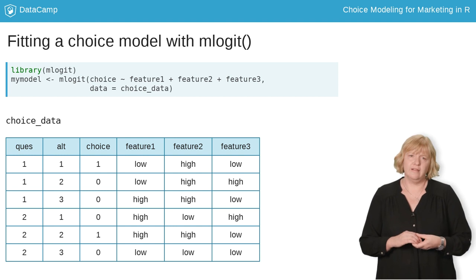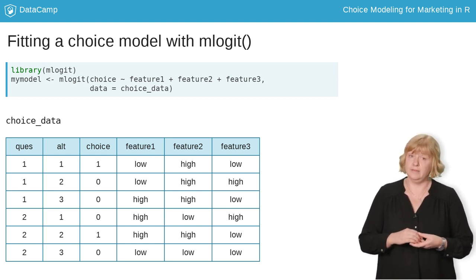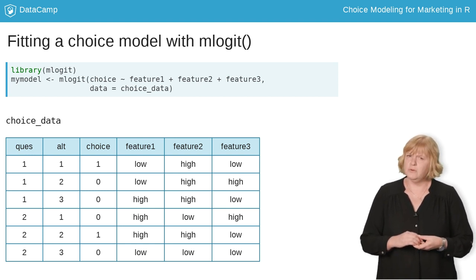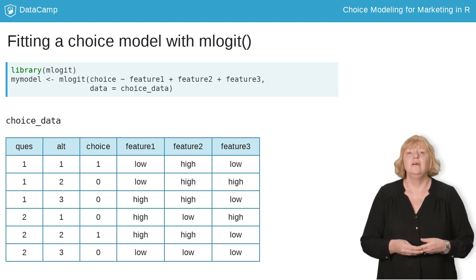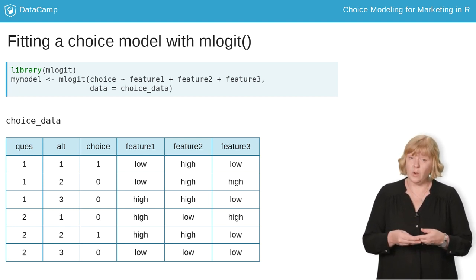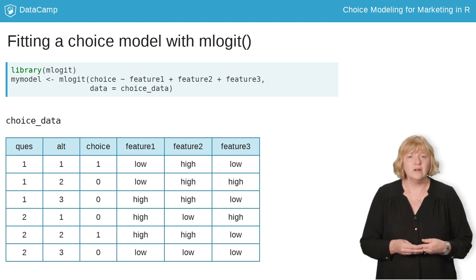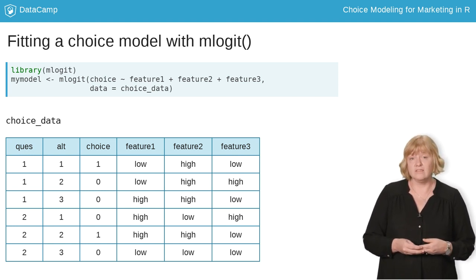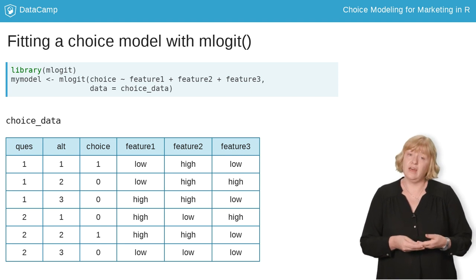Just as with lm, there are two key inputs to mLogit: a formula and the name of the data frame where the data is stored. The data input is pretty straightforward, but the data has to be choice data. That means it has to have a column that indicates which choice observation each alternative belongs to — here, that is the quest column. It also has to have a column of zeros and ones indicating which option was chosen, and here that is labeled choice.